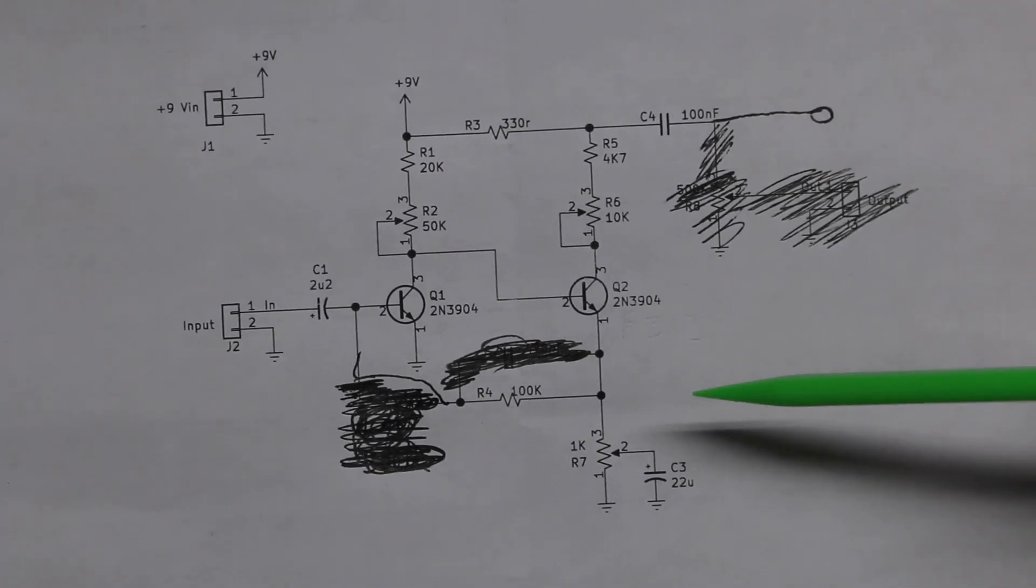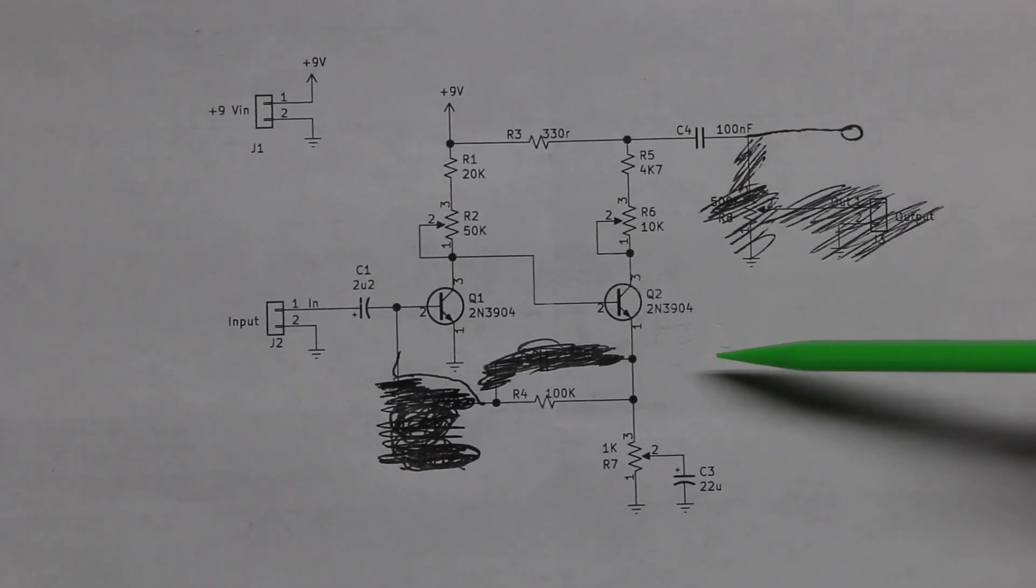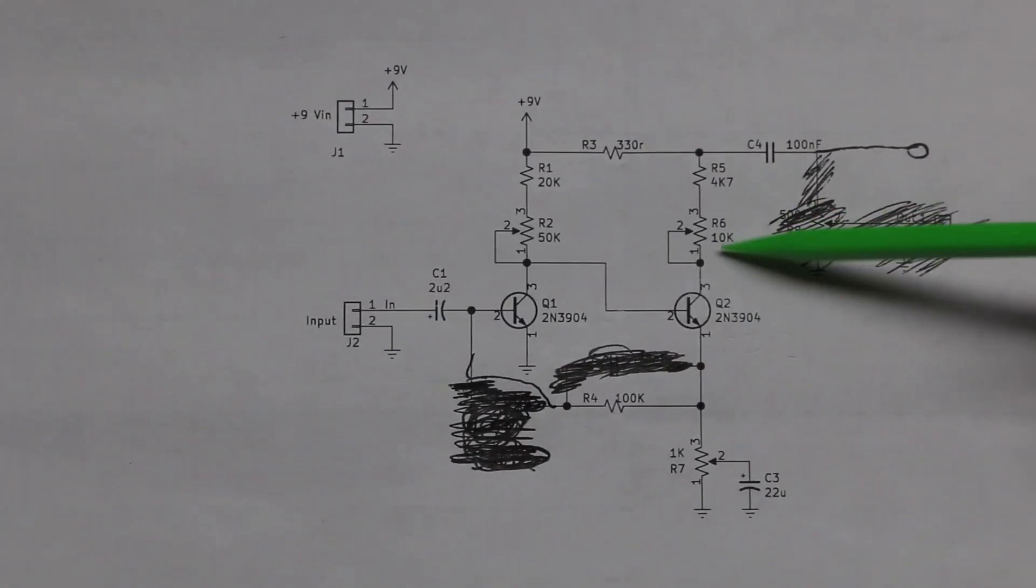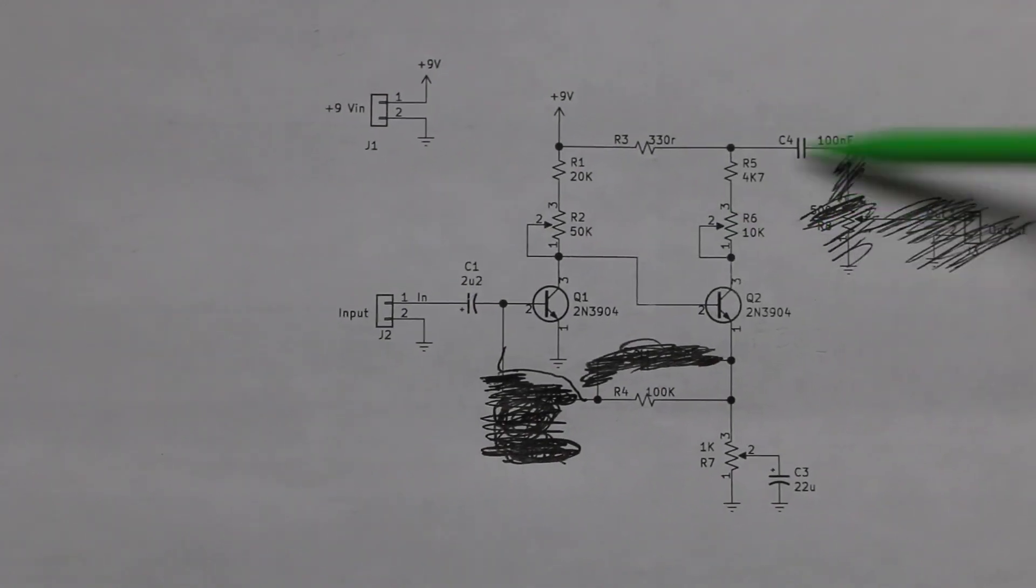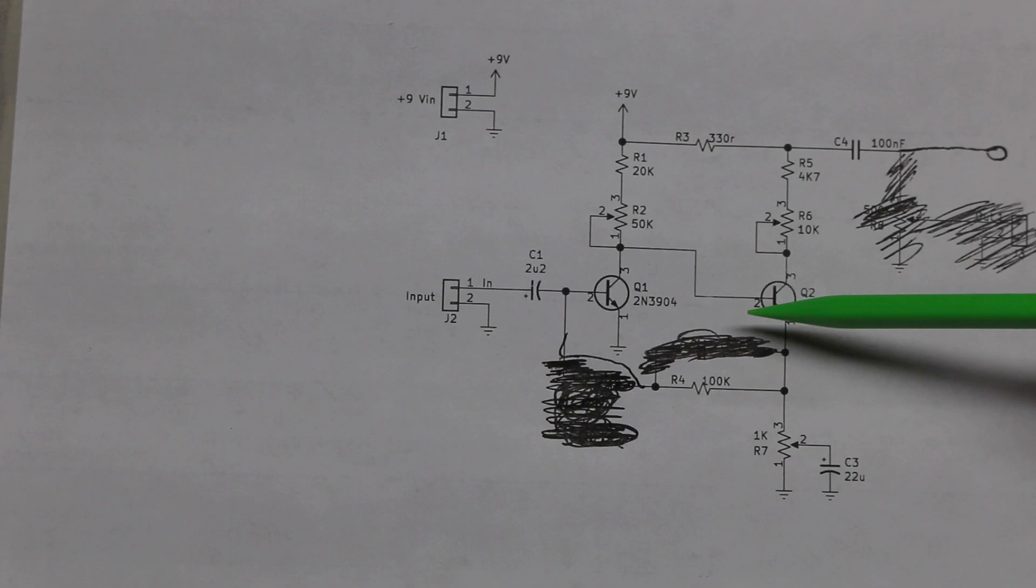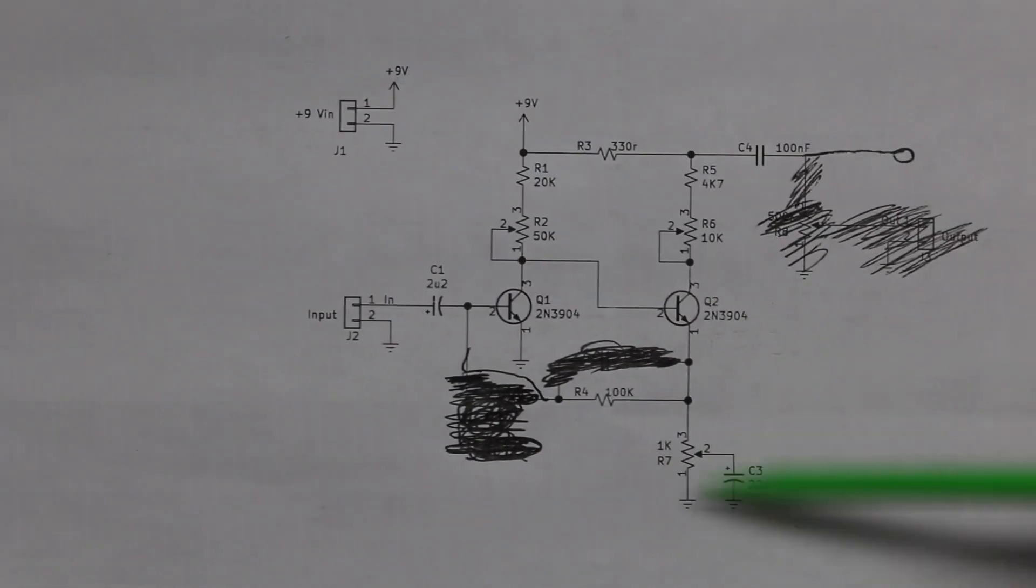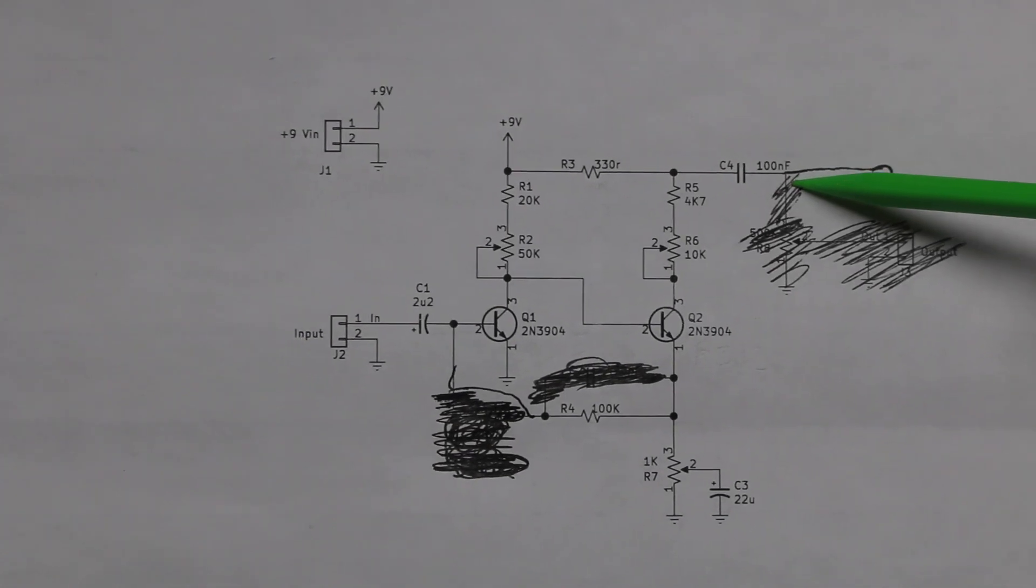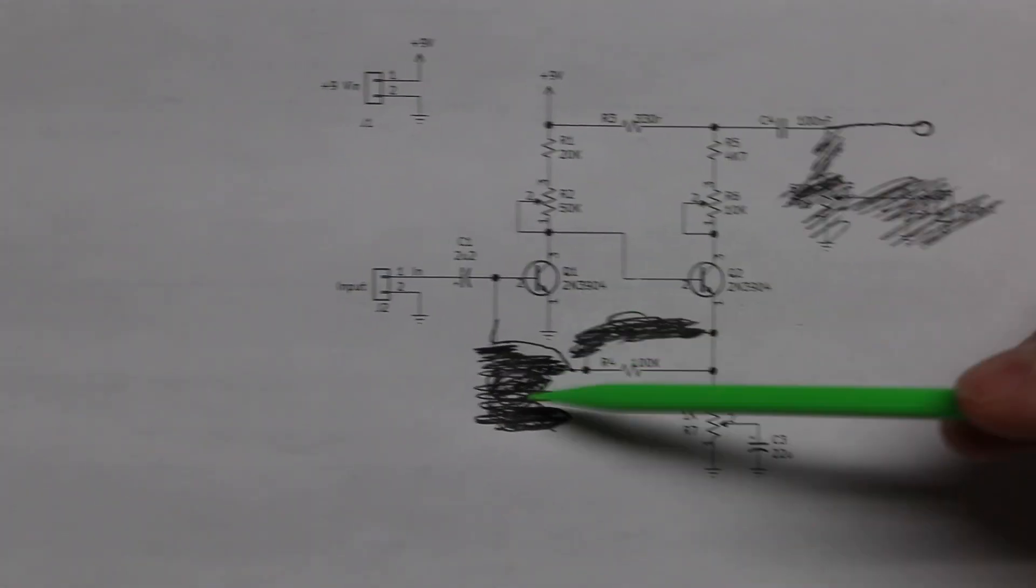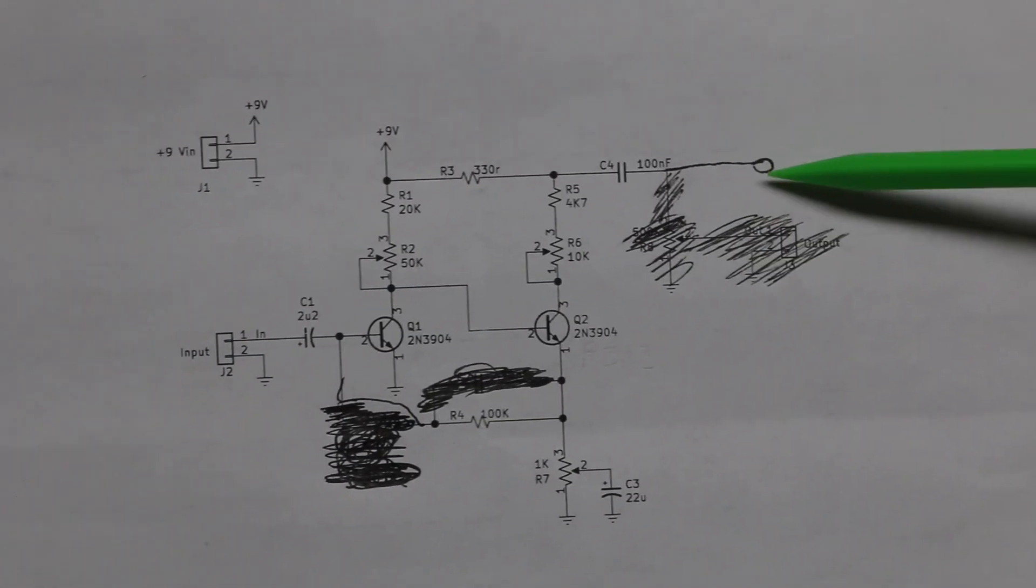This is the schematic of the original fuzz circuit board based on the fuzz face type circuit. Two transistors and two trimmer pots to adjust to get the right biasing for experimenting with different transistors. The fuzz potentiometer controlling the amount of distortion, and there used to be a volume control pot from the output to ground.